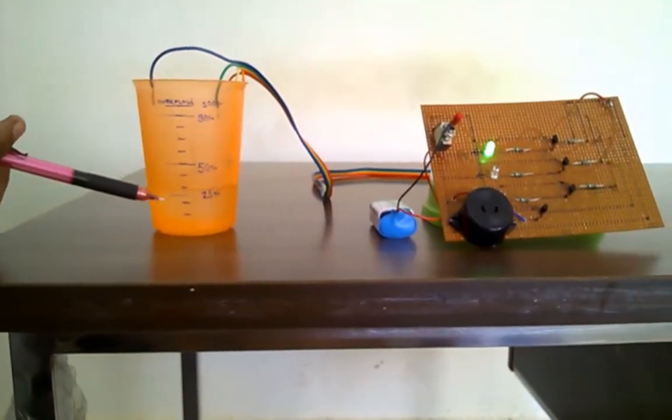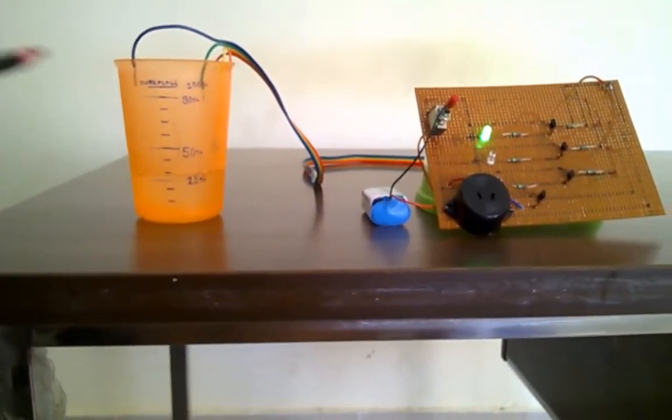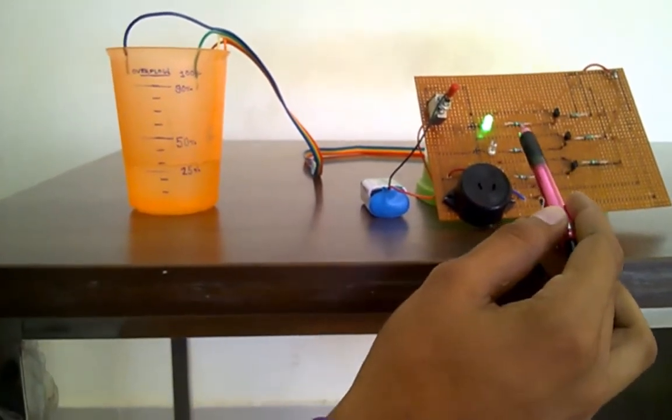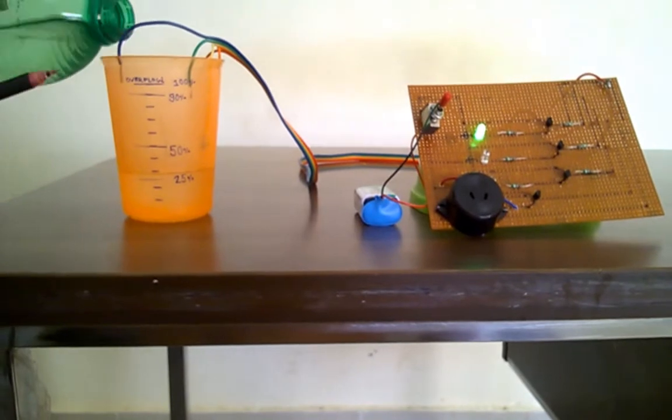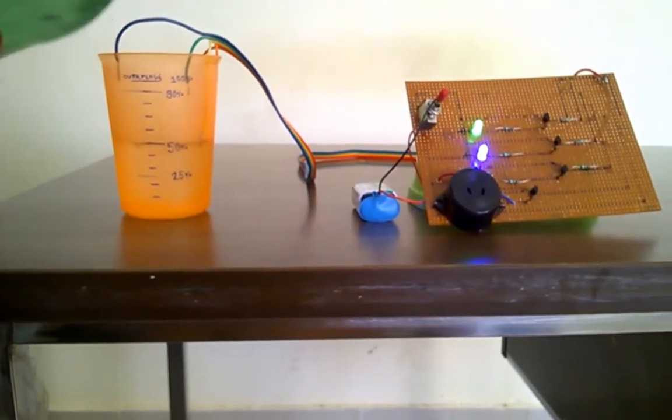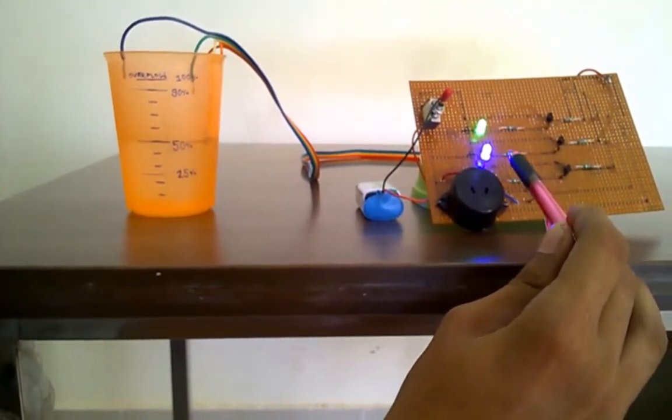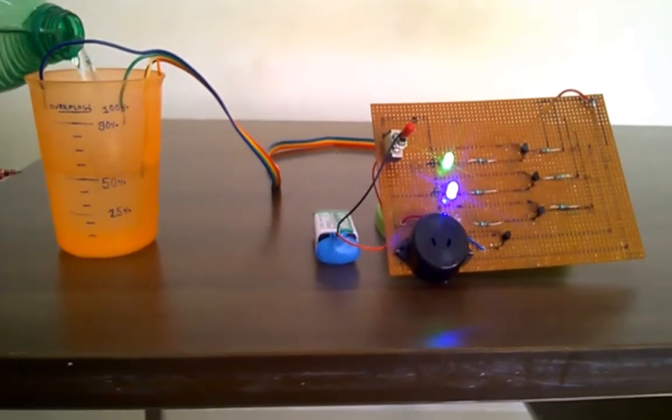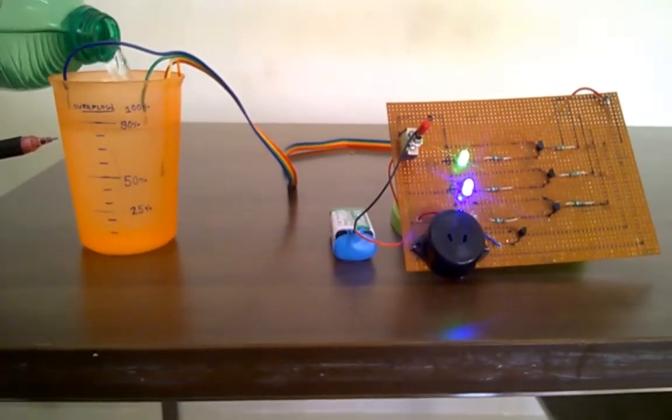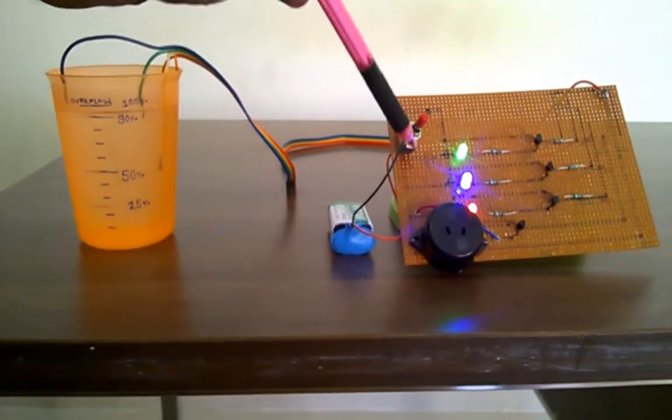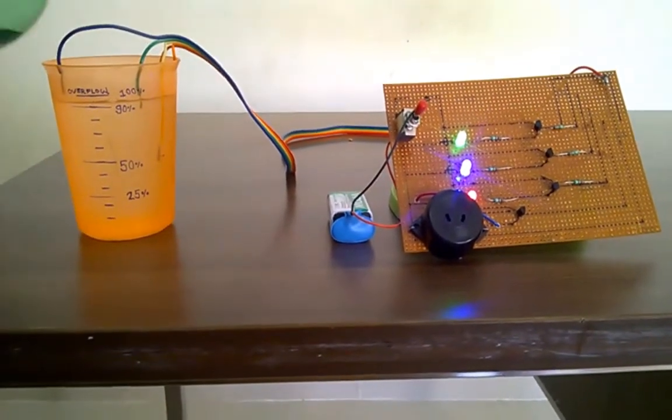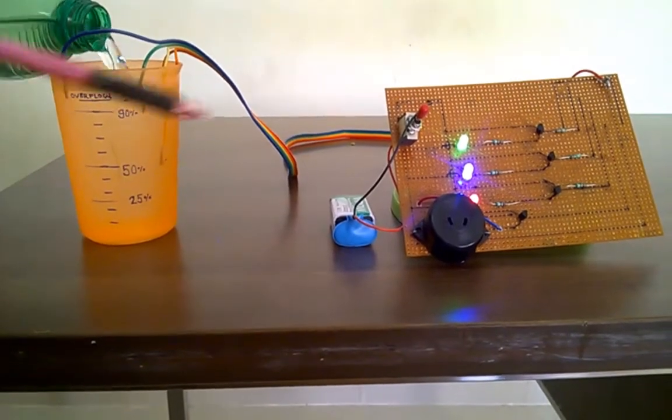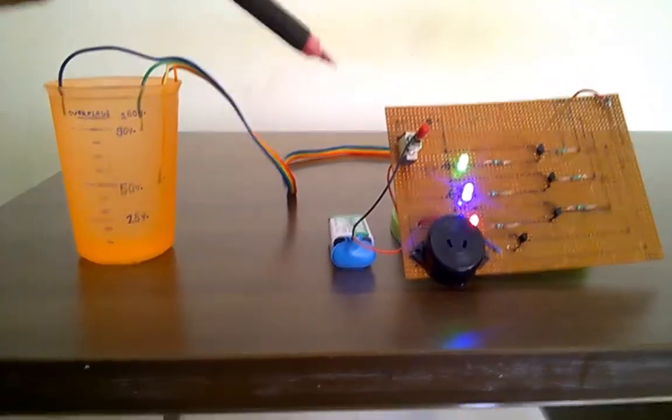When we fill up the glass, at the 25% level, the green color LED is activated. After 50% water is filled up, the blue color LED is activated. After the 90% level of water, the red color LED is activated. After overflow of the water, the buzzer is on.